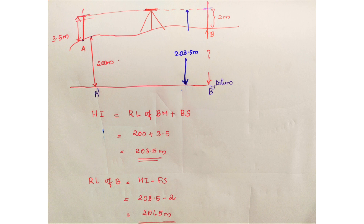The foresight reading at B is 2 meters. The foresight is the highest level reading. The benchmark has a reading of 2 at the height of instrument. We set the height of the instrument.